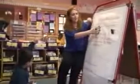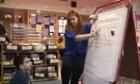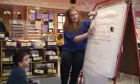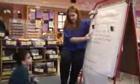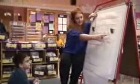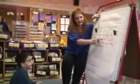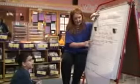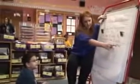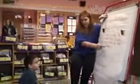Step one, Sean, what are we going to do? Read the problem. Let's read it together. Sean has six cats. Miss McCormack has five cats. How many cats do they have all together?